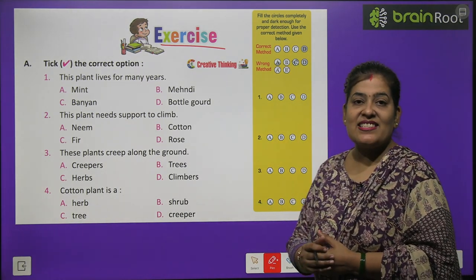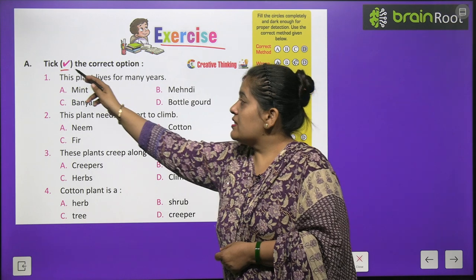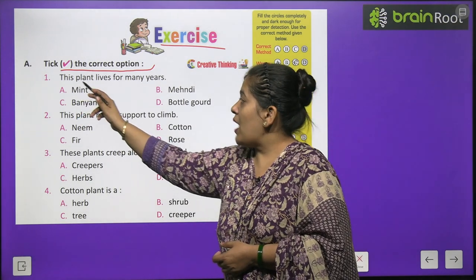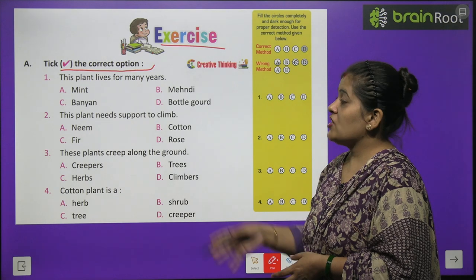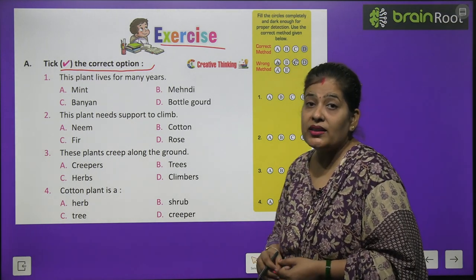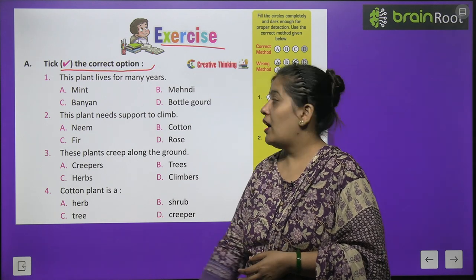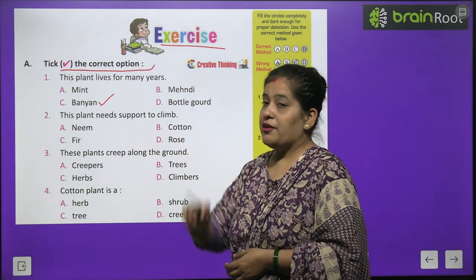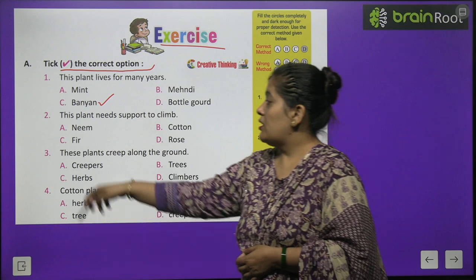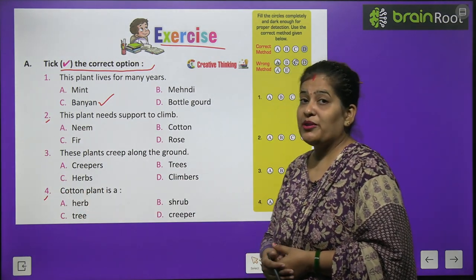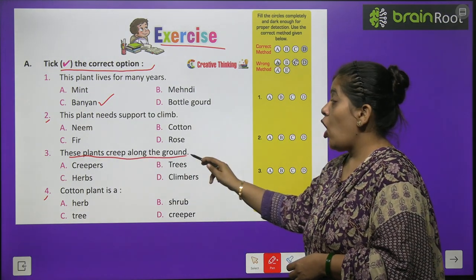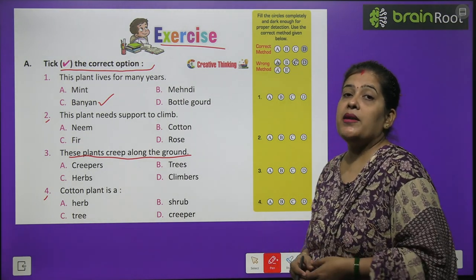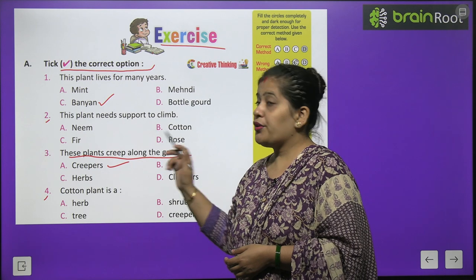Now time to do the exercises. Exercise 1: Tick the correct option. 'This plant lives for many years' — the options are Mint, Banyan, Bhindi and Bottle gourd. The correct answer is Banyan tree. Numbers 2 and 4 you will do by yourself. 'These plants creep along the ground' — Creeper, Herbs, Tree or Climber? The answer is Creepers.